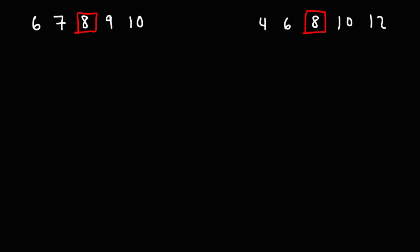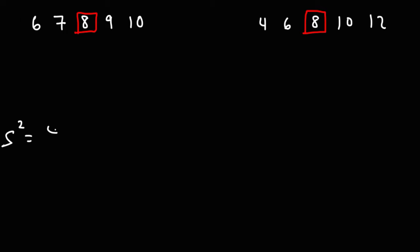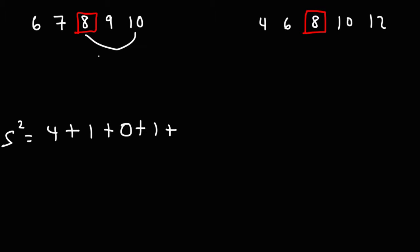Now let's calculate the variance for each data set. We'll do it the quick way. We need to take the difference between each data point and the mean and then square the difference. The difference between 6 and 8 is negative 2, but when you square it, it's going to be 4. The difference between 7 and 8 is negative 1 — when you square it, it's 1. And then 8 itself has a difference of 0. The difference between 9 and 8 is 1; when you square it, it's 1. The difference between 10 and 8 is 2; when you square it, it becomes 4.